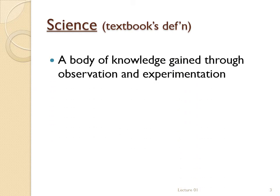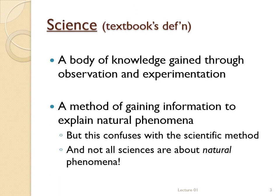The textbook's definition of science is pretty good for most purposes: a body of knowledge gained through observation and experimentation. It also says that science is a method of gaining information to explain natural phenomena, but that's less good because it confuses science with the scientific method — the thing you're doing is not the same as how you're doing it. Not all scientific disciplines are interested in natural phenomena; anthropology, for example, is interested in human-made phenomena.